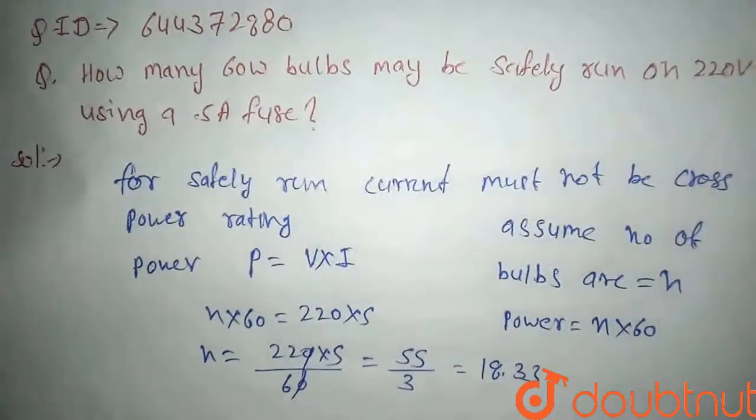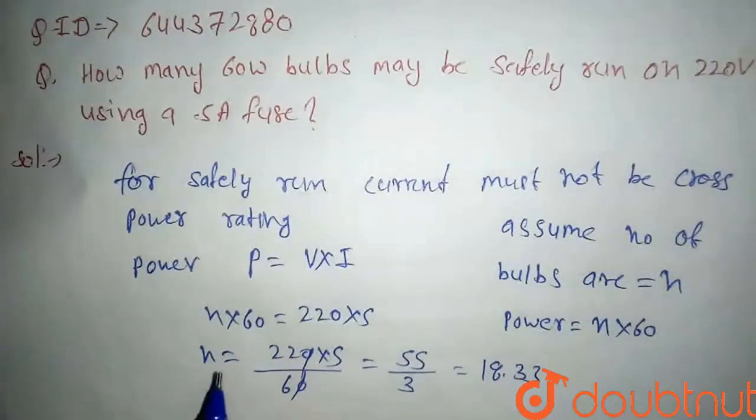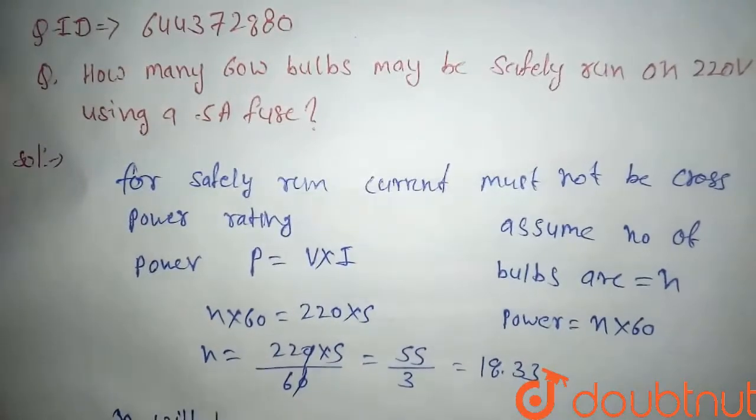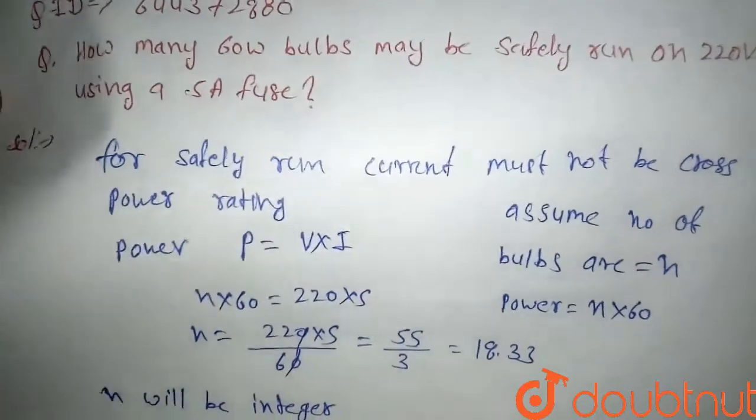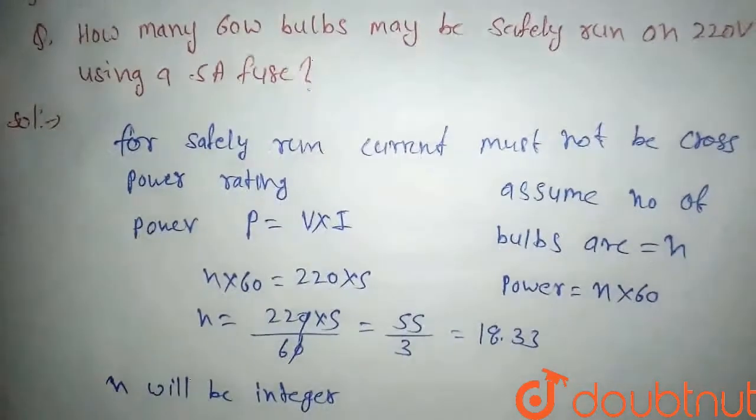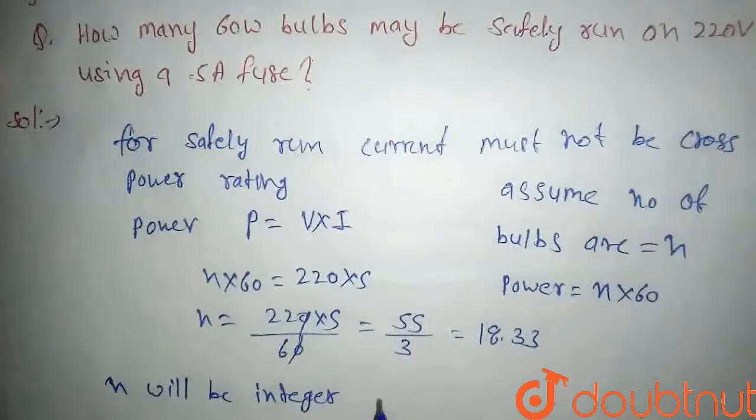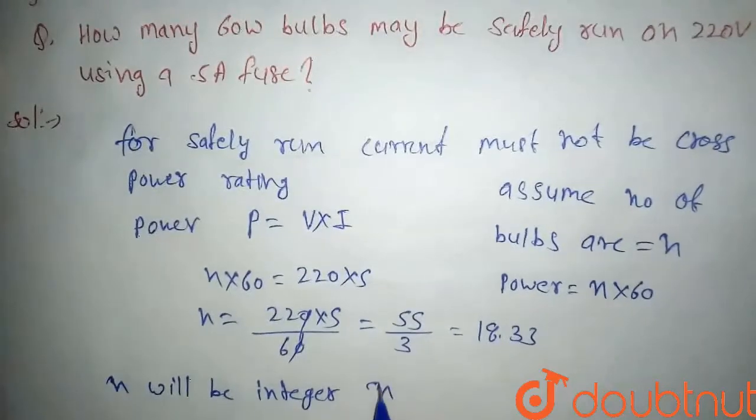Here, our n is number of bulbs, so it will be integer. N will be integer because it is a number, so it should be integer. We can say our n will be